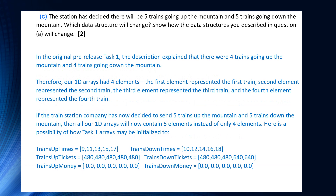For part C, if there are five trains going up the mountain and five trains going down, in the original pre-release there were four trains going up and four going down, so all one-dimensional arrays had only four elements — each element representing one train. Now with five trains going up and five going down, all one-dimensional arrays will contain five elements instead of four.